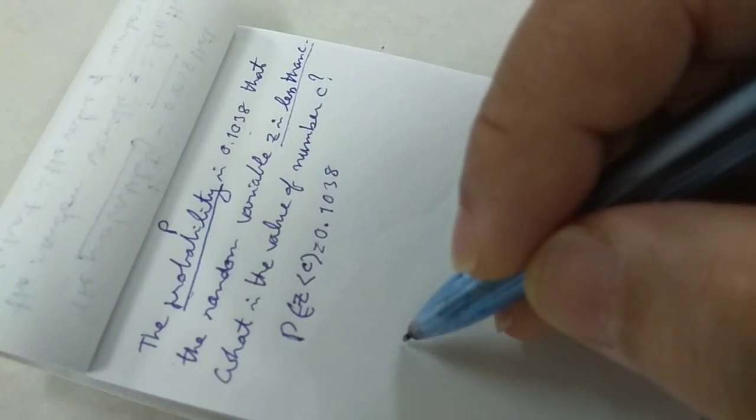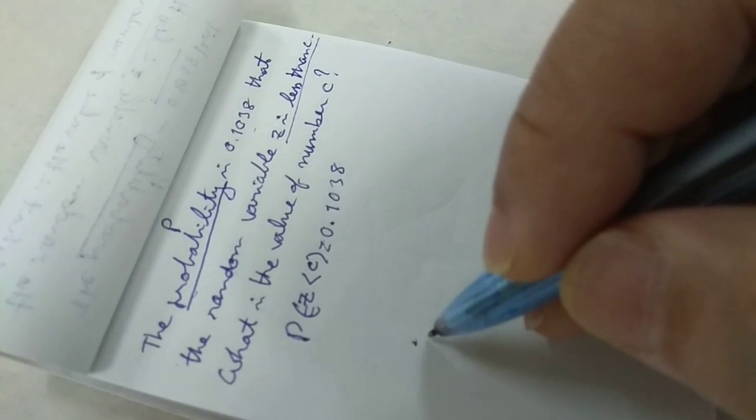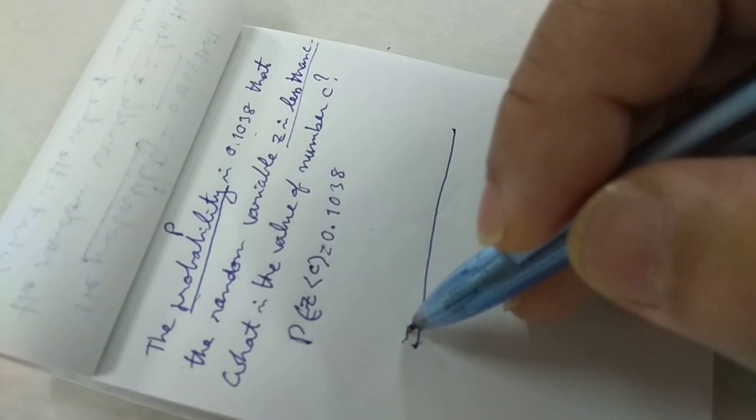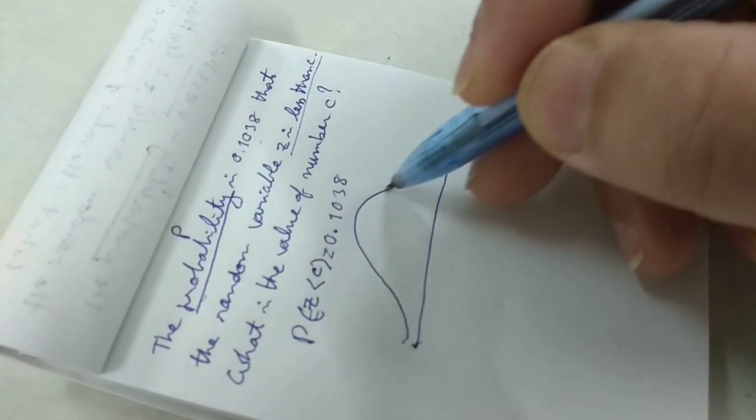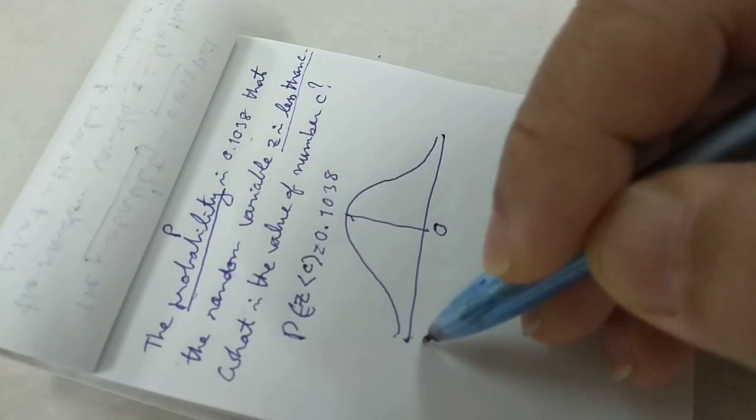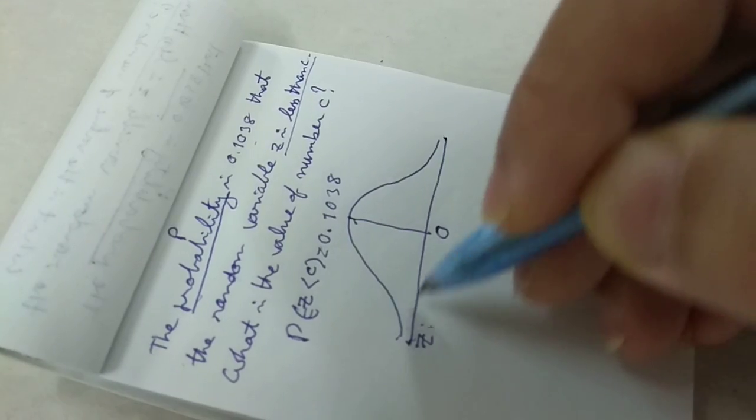The situation is you draw random variable Z and the normal distribution curve. Zero is in the middle, and C values are on the straight line.